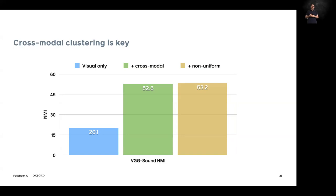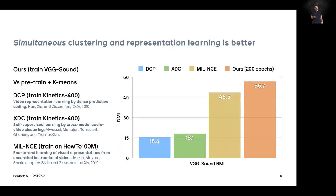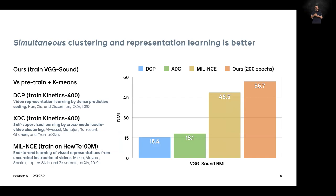Allowing a non-uniform label distribution gives a small additional boost. We also compared to the alternative of pre-training a representation in an unsupervised manner, freezing it, and then clustering on top. The result is that simultaneous clustering and representation learning is better — even when the frozen representation was trained on HowTo100M (100 million videos), joint training on the much smaller VGG Sound dataset directly outperforms it.